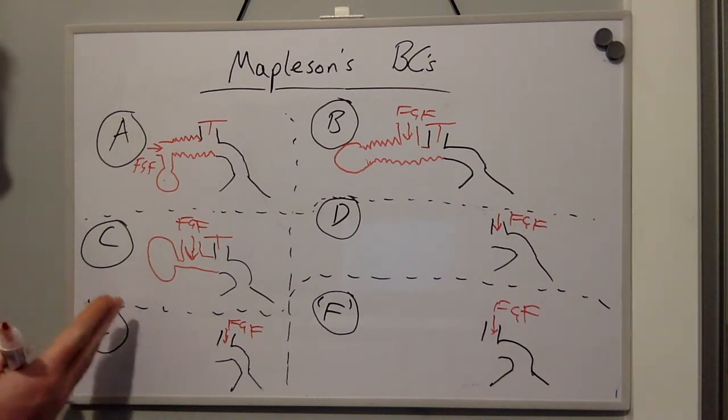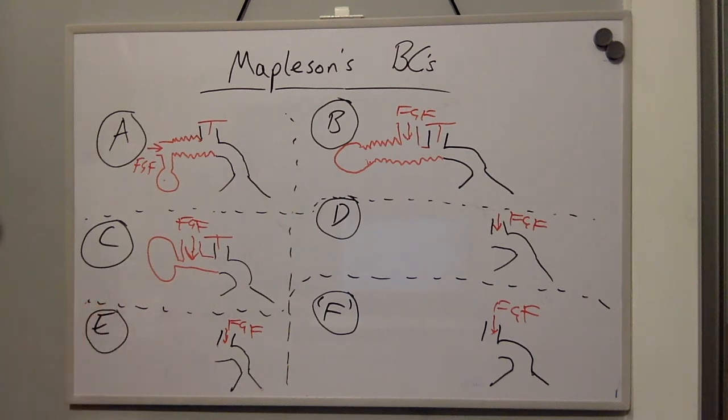And Mapleson breathing circuit C also known as the water circuit is commonly used when there is a need to manually ventilate a patient outside the theatre environment. So now we have Mapleson D.